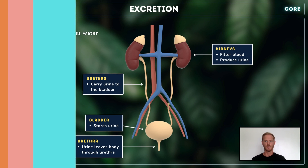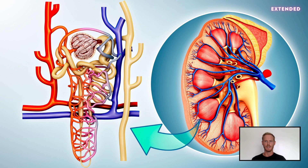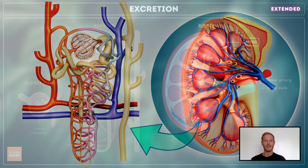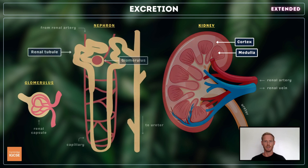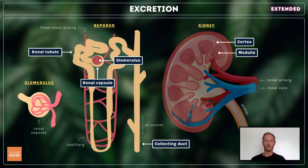Moving on to the extended content, beginning with the structure and function of a kidney. The outer region of the kidney is called the cortex and the inner zone is called the medulla. The tissue consists of many tiny structures called nephrons. A single nephron is made of a coiled knot of capillaries called a glomerulus, a cup-shaped organ called a renal capsule, a looping renal tubule and a collecting duct.